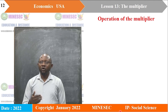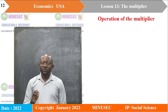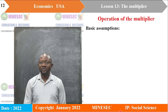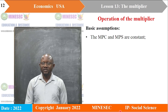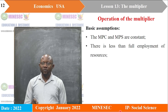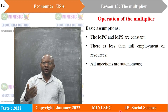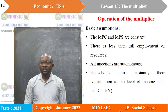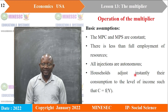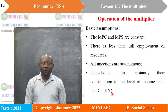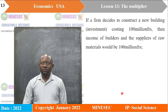Before looking at the operation of the multiplier, we need some basic assumptions. We assume that the MPC and MPS are constant. We assume there is less than full employment of resources. We assume all injections are autonomous — not related to income. We equally assume that households adjust their consumption instantly to the level of income, such that consumption is a function of income.